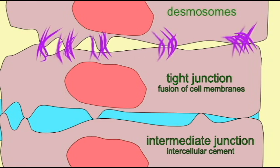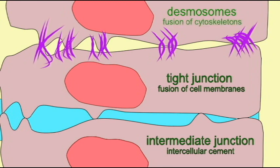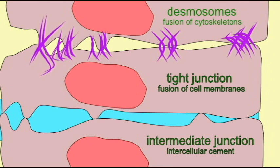There are intermediate junctions where different proteins and intercellular cements unite these cells. There can be a fusion of the two cytoskeletons in junctions known as desmosomes to physically anchor the cells together.